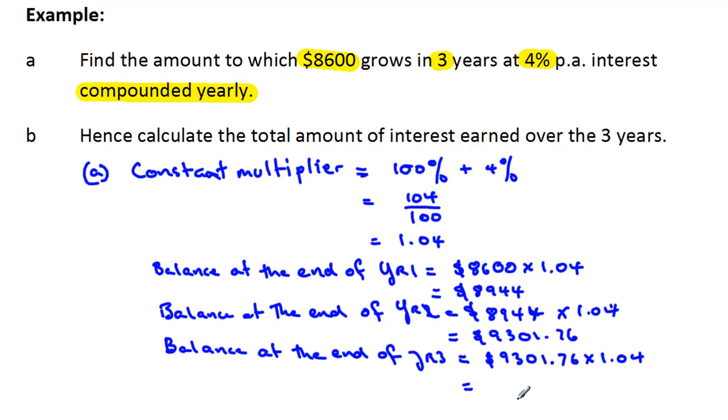And that turns out to be $9,673.83. And that's a rounded number to the nearest cent. So we'd better put here rounded.